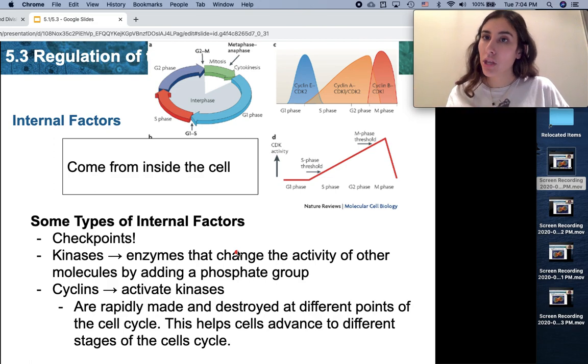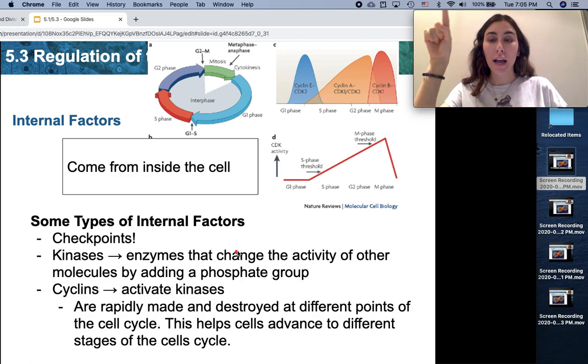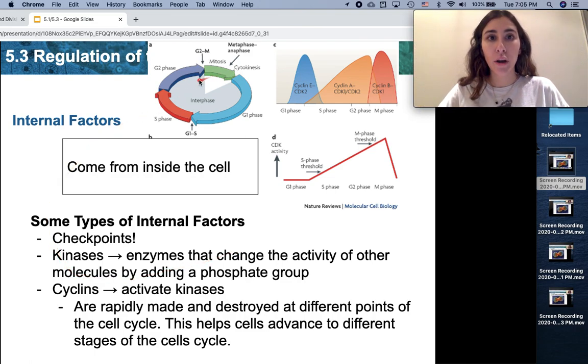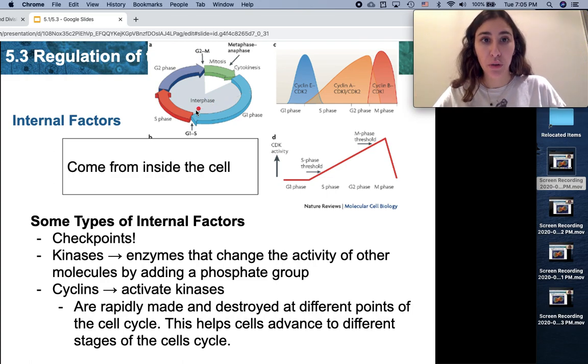The cell does the exact same thing. The cell cycle has different stages. We begin with G1, S, G2, and then M. Before one stage of the cell cycle can progress, before G1 can progress to S, and before S can progress into G2, and before G2 can progress into mitosis and then cytokinesis, there will be a checkpoint. There will be a checkpoint here, here, here, and here.